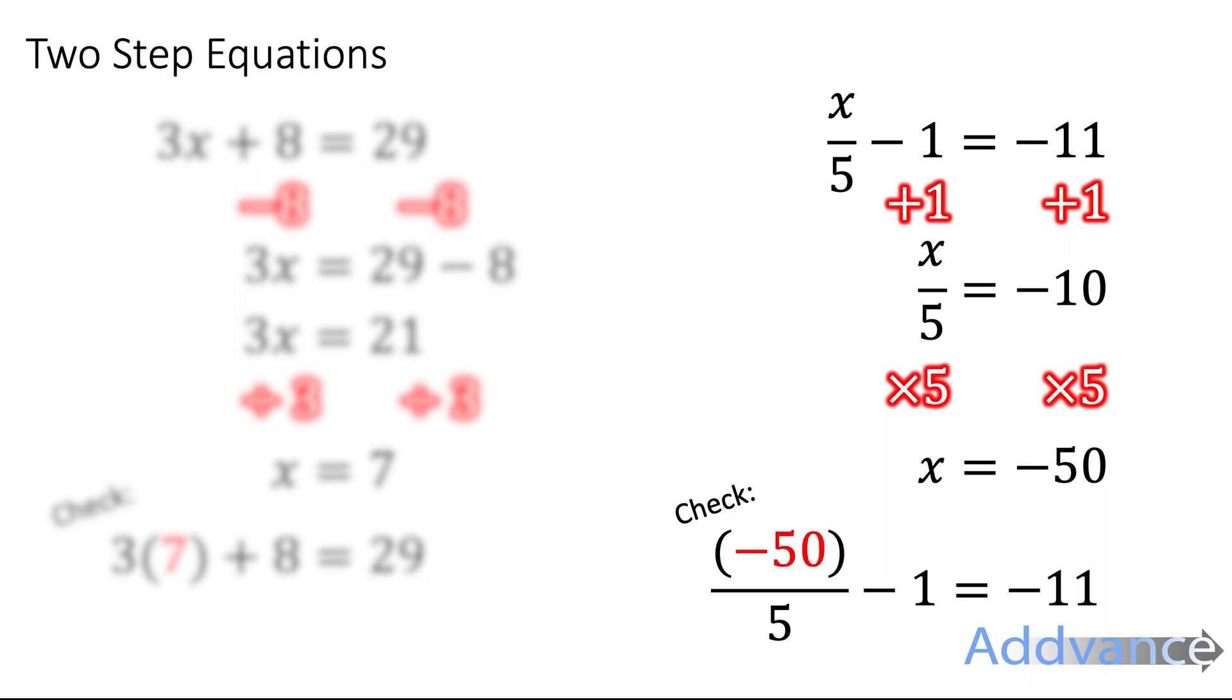And I can check, of course, by just putting my answer back into the equation. Minus 50 divided by 5 minus 1 equals minus 11. Minus 50 divided by 5 is minus 10. Minus 1 is minus 11. Yes, that makes sense to me. And again, it looks like I've got this right.